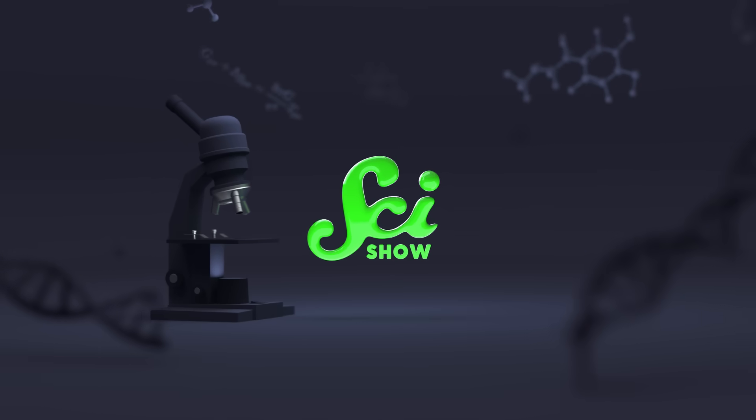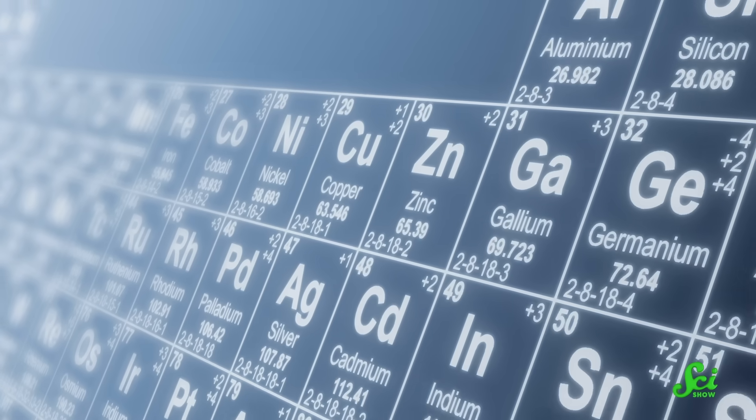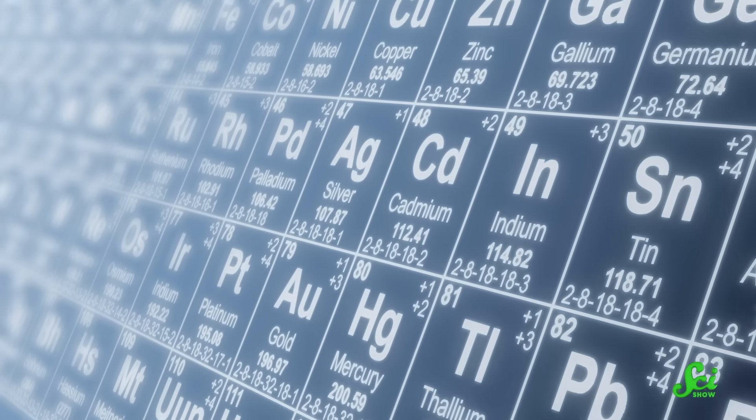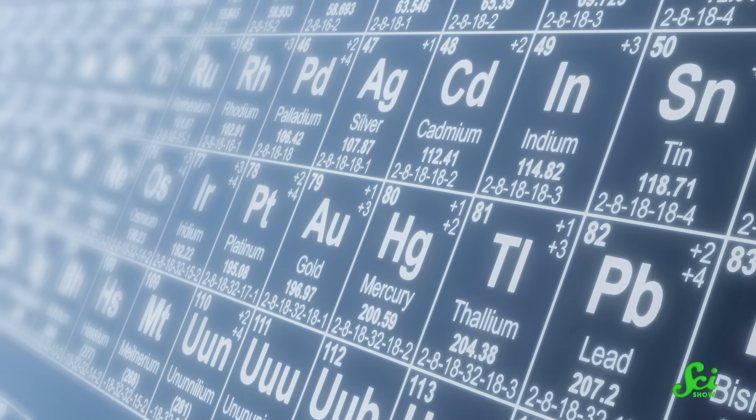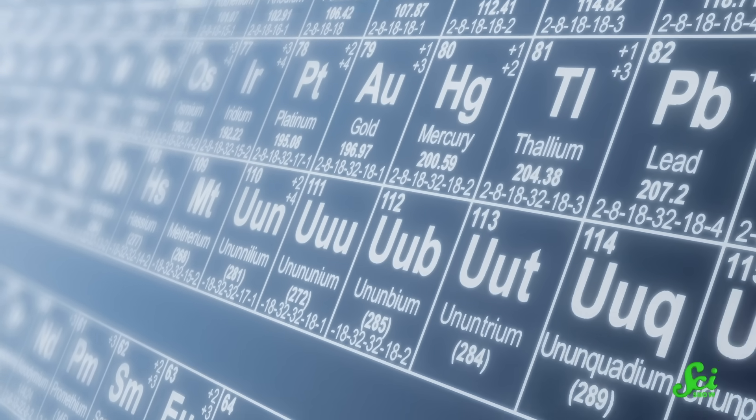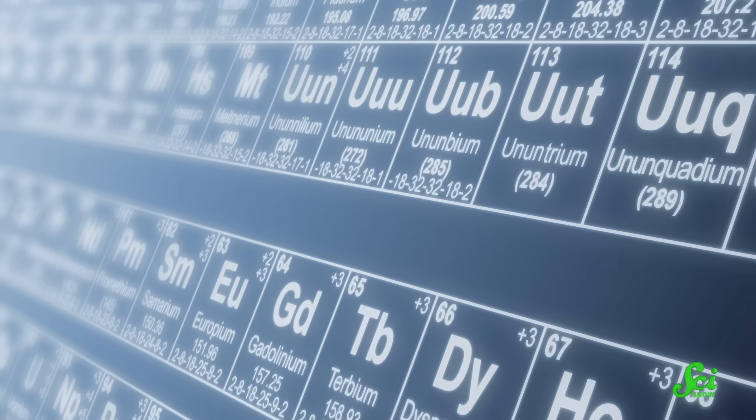This isn't a graphic design mistake. Even though it's the simplest element, chemists actually don't agree on where hydrogen belongs in the periodic table. There are at least three credible places you can stick it, and that's a problem for our understanding of how elements work. As fixed and immutable as it may seem hanging on your high school chemistry classroom wall, the periodic table is really a work in progress.